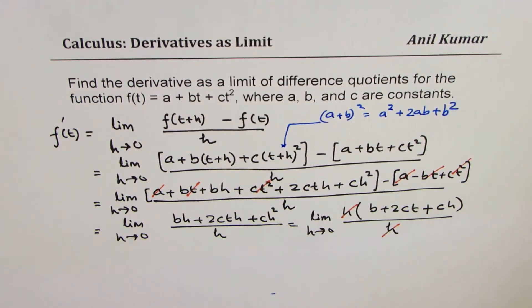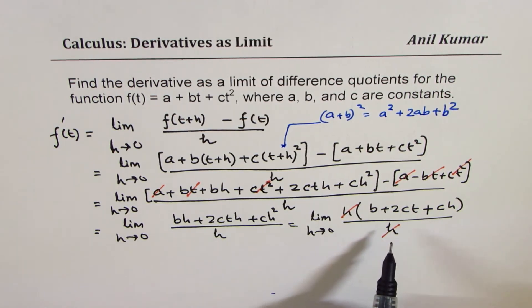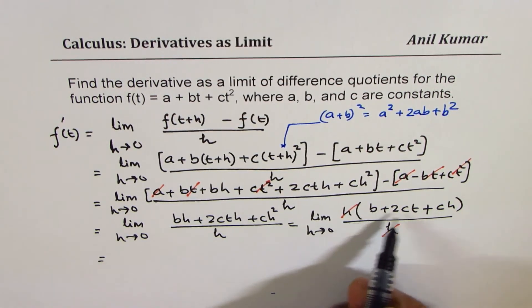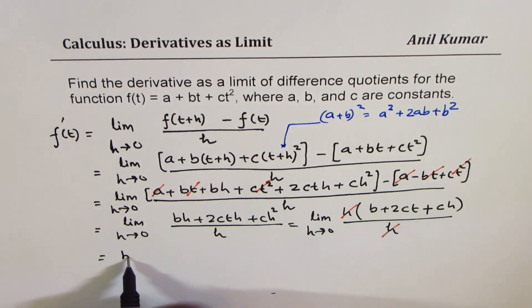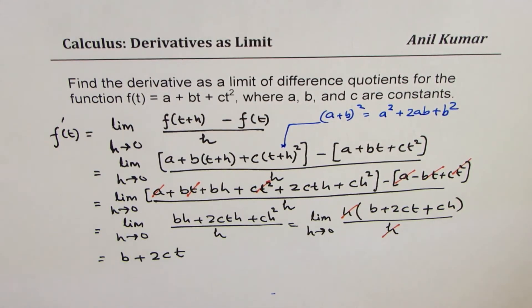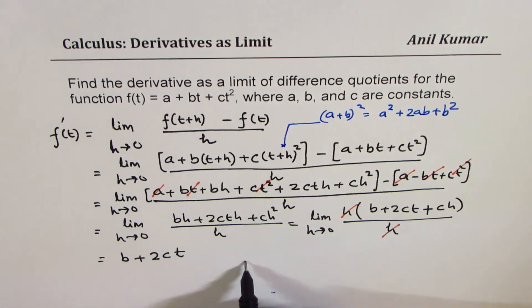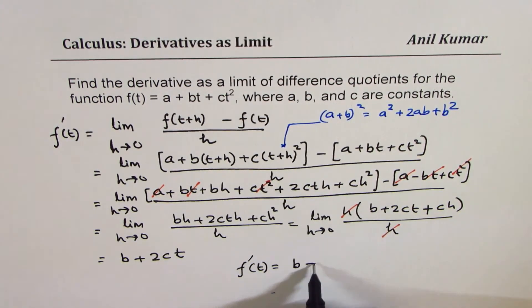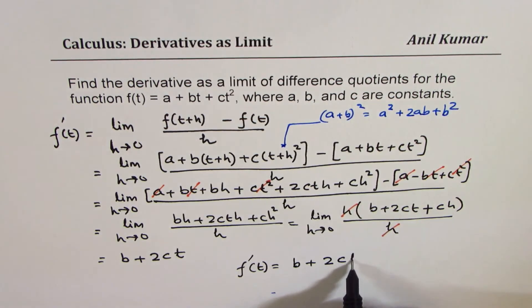At this stage, you can substitute h equals to 0 and find the general expression for the derivative. Substituting 0, we get b plus 2ct. That becomes the derivative of the function. We can write down our answer that for this given function, derivative is b plus 2ct.